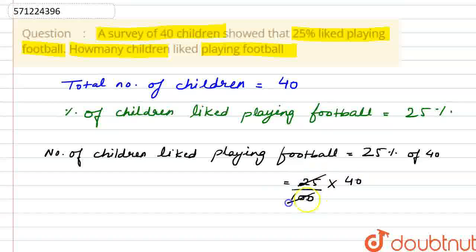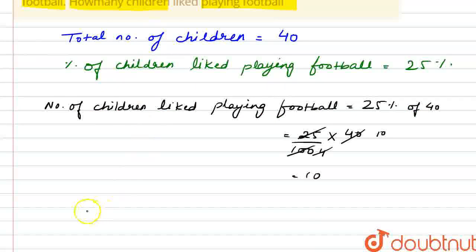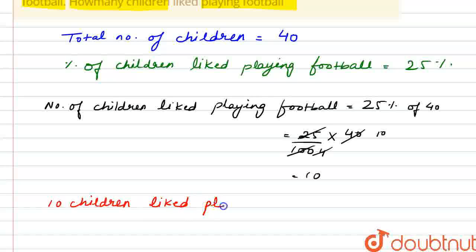Here, 25 divides 100 by 4 and 4 divides 40 by 10. So we have found out that this equals 10. Our final answer is that 10 children liked playing football.